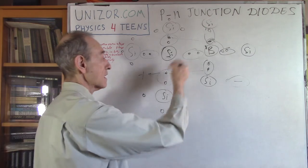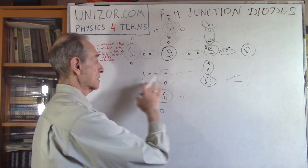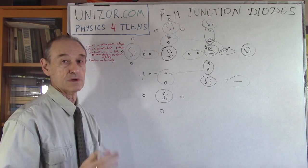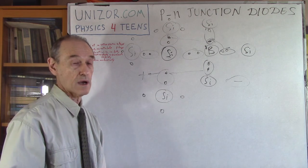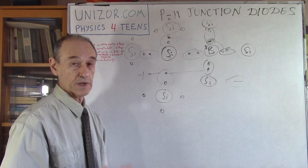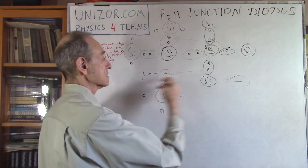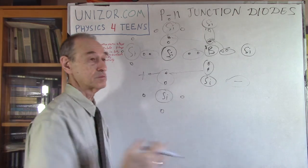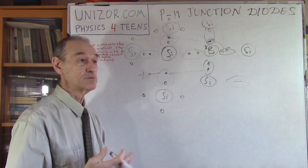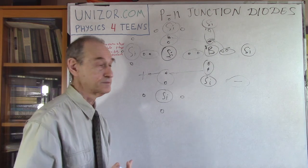That's why they are called semiconductors. With a weak potential difference there is no current — it acts as an insulator. But if there is sufficient excitement or pressure, it becomes conductive.